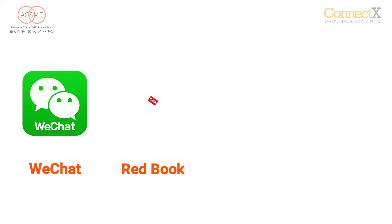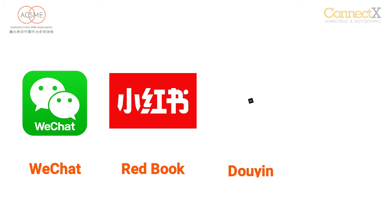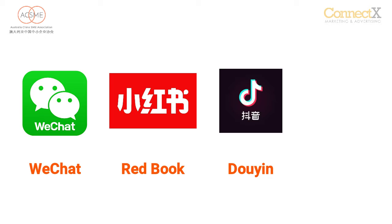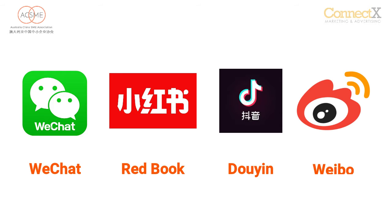So now we're going to talk about social media. What are the main social media platforms we should be aware of? Well, the main social media platforms are WeChat, Redbook, Zouyin — which is the Chinese version of TikTok — and there's Weibo.